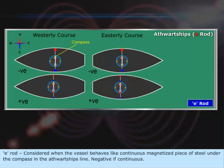E-Rod: Considered when the vessel behaves like a continuous magnetized piece of steel under the compass in the athwartships line. Negative if continuous.